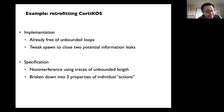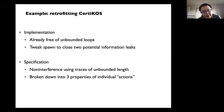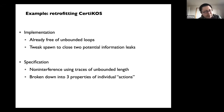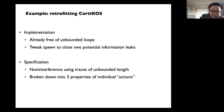What the CertiKOS paper did is prove three lemmas, each about a single action like a yield or a single system call — each of which is actually finite and simple enough to express. They proved in Coq that if you have those three individual lemmas, then together they imply the non-interference theorem. So what we did was prove those three lemmas in CertiKOS using Serval. The reasoning about whether they combine to imply non-interference is left in Coq.